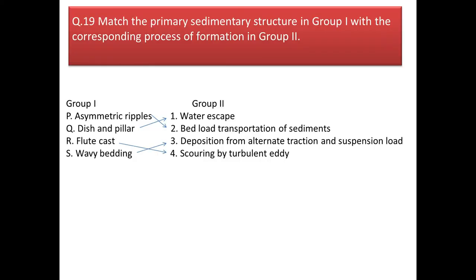Next question: match the primary/secondary structures in group 1 with their corresponding process of formation in group 2. Asymmetrical ripples transport bed load in the sediments. In dish-pillar structure we get water escape. In flute cast we get scouring by turbulent flow. And wavy bedding is related to deposition from alternate traction and suspension load. Our answer will be option B.